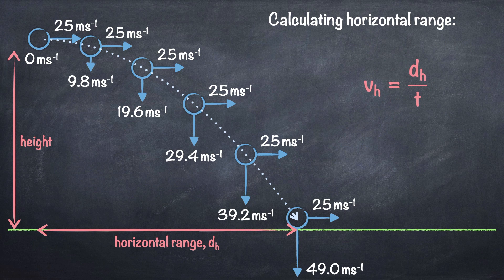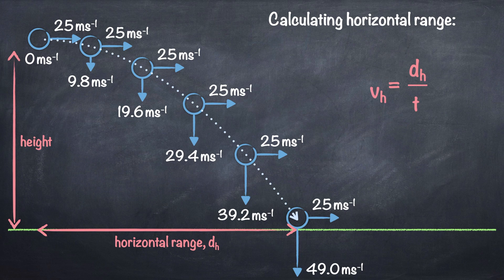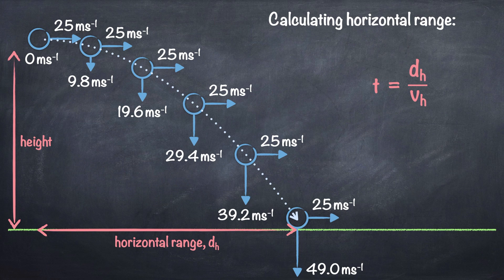Finally, you could be given the projectile's horizontal range and its horizontal speed and be asked to find the time of travel — how long it takes to move horizontally over the full horizontal range. In that case, we rearrange the equation and divide the horizontal range by the projectile's horizontal speed. If you're on the ball, you'll have realised that this time is also equal to the time the projectile takes to fall vertically to the ground from its starting position.